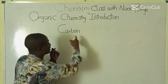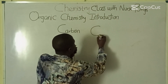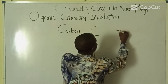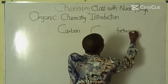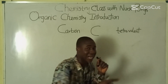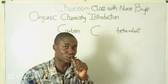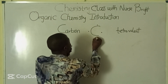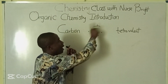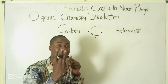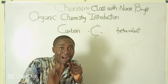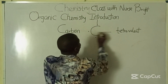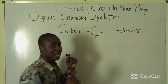Carbon as an element is symbolized with the symbol C. Carbon is a tetravalent element, meaning that it has four valence electrons. You can see the valence electrons around carbon. So carbon has four valence electrons, which means that carbon can form four bonds.